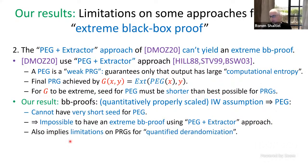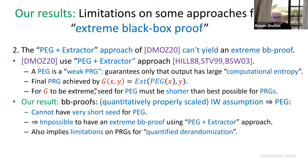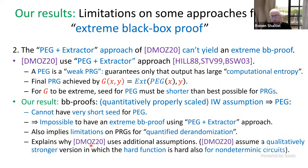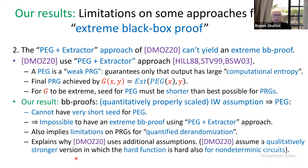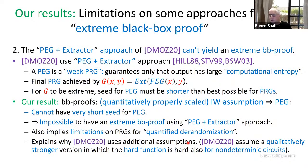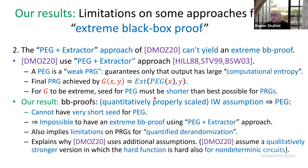This same proof also implies a limitation on pseudo-random generators for quantified derandomization, since they are closely related to pseudo-entropy generators. This explains in retrospect why the DMOZ paper uses additional assumptions. DMOZ uses a qualitatively stronger assumption than Impagliazzo-Wigderson, in which the hard function is hard not only for deterministic circuits, but also for a version of non-deterministic circuits.